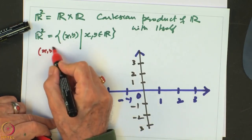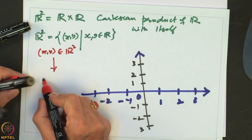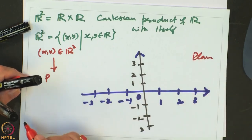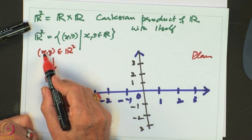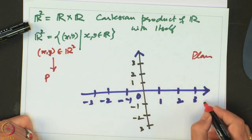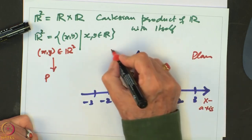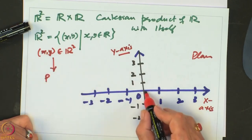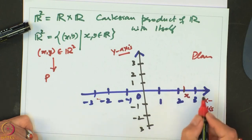Given an ordered pair (X, Y) belonging to R2, we want to associate to it a point P in the plane. We look at X and move X units along the horizontal axis — called the X axis — and the vertical one is called the Y axis. If X is positive we go right; if X is negative we go left. So we arrive at X units along the horizontal.